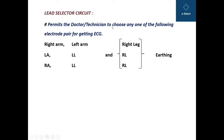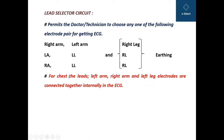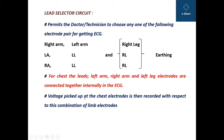The lead selector circuit permits the doctor or technician to choose any one of the following electrode pairs for getting the ECG. The combinations may be: right arm and left arm, left arm and right leg, or left arm, left leg, and right leg. Right leg is common across combinations as it provides the earthing to the patient. For chest leads, the left arm, right arm, and left leg electrodes are connected together internally in the ECG, and the voltage picked up at the chest electrodes is recorded with respect to this combination of limb electrodes, as decided by the medical doctors and technicians.